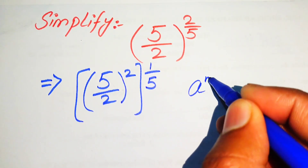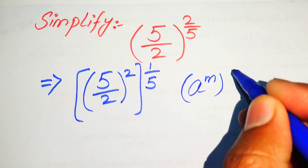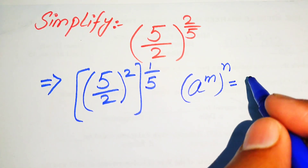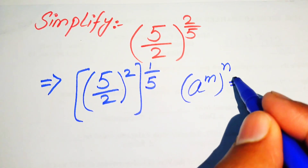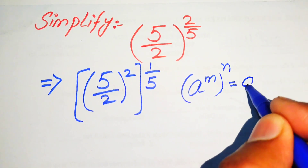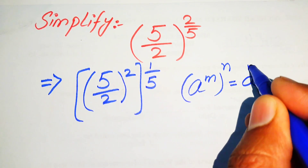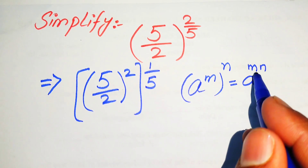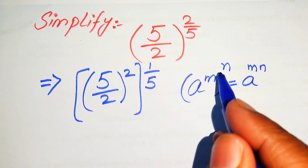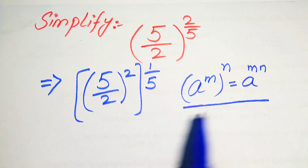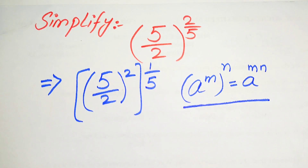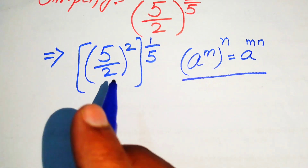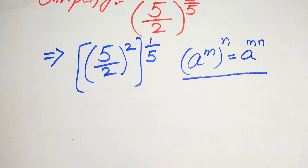We apply the exponential law: if we have a to the power of m, to the power of n, then we write this as a to the power of m times n. So here we write this type of term in this way, according to this law.